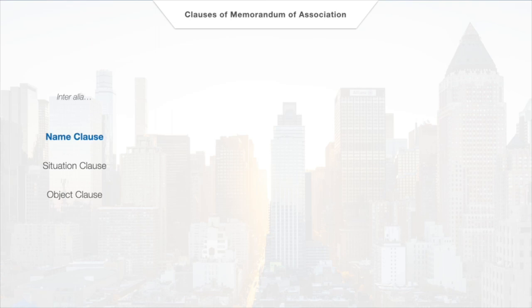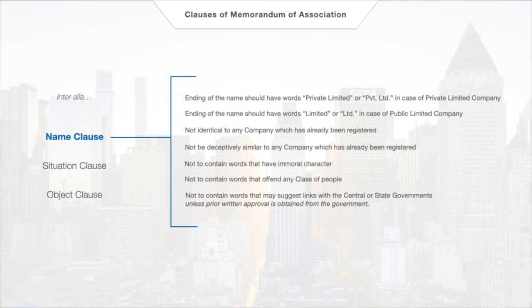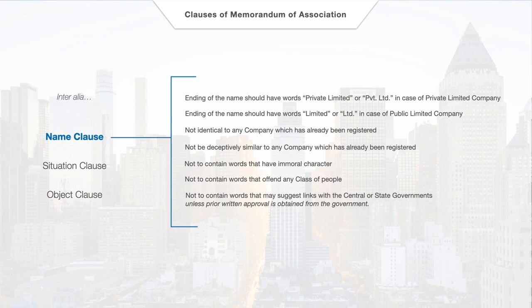In the name clause, it must be remembered that the company's name must comply with other rules set out under the Act. This basically means that the name must end with the words 'private limited' in case of a private limited company, and just the word 'limited' in case of a public limited company. Furthermore, the name of the company cannot be one which is already registered, and must not be deceptively similar to other registered companies such that people are misled.